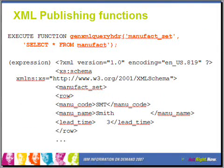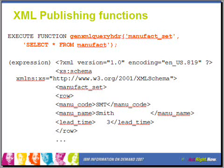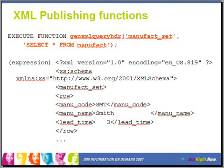The GenXML query header simplifies things by taking a SELECT statement as its second argument and converting the result set into an XML document. The difference here is that the mapping from column names to XML elements is implicit, whereas with the plain GenXML function you can cast the row into a custom row value type, allowing you to rename elements to whatever your application requires.